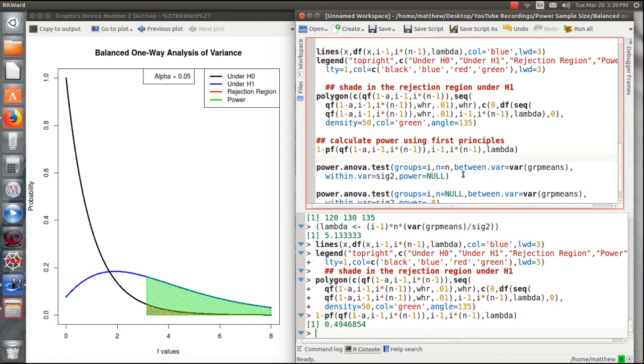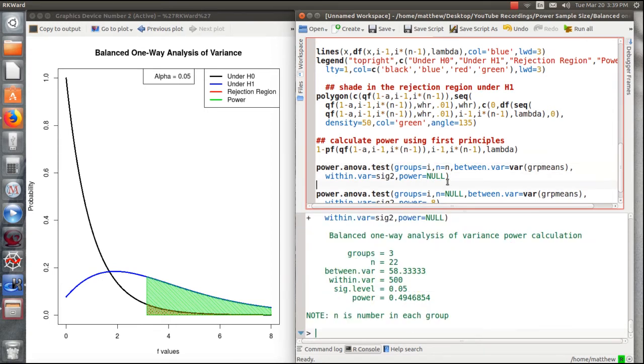So to do this within R, we use the power.anova.test, and there's I was three, so it's three groups, N was 22, and the vector of group means you take the variance of it, and that's the between group variance. Within variance is sigma, so that was 500, and we leave the power null because we want to calculate power. And we get 49%, which is the same as calculating it from first principles.